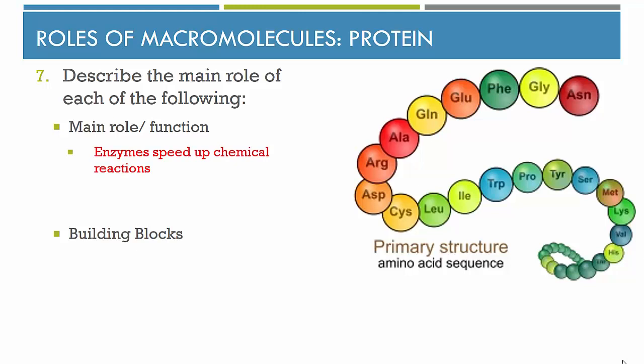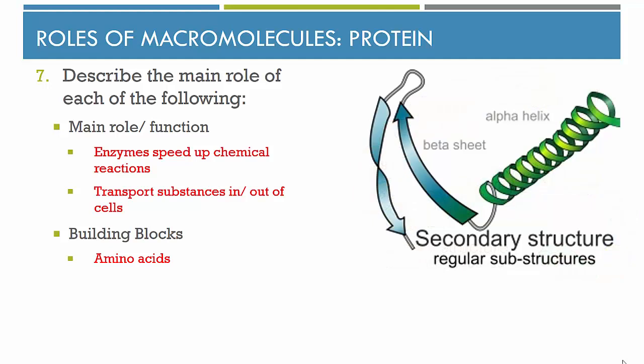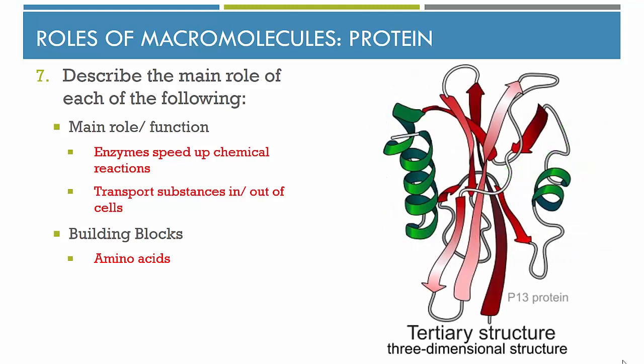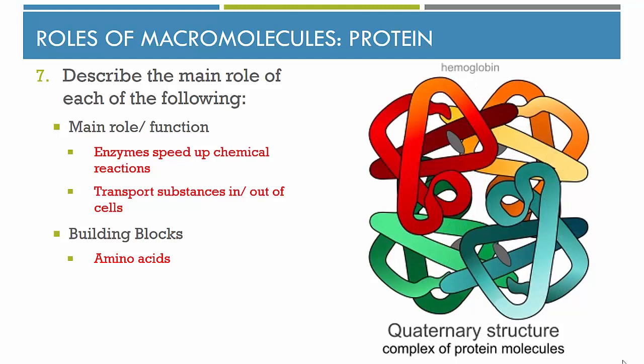Protein does a lot of different jobs. In particular, enzymes are proteins that speed up chemical reactions. Proteins are also involved in transporting substances in and out of cells. The building blocks for a protein are amino acids. Proteins have very complicated shapes — they start as a sequence of amino acids that can be formed into a beta sheet or an alpha helix. Those structures can then be twisted and folded on top of each other to form a three-dimensional structure. The quaternary structure is the complex of protein molecules together. Hemoglobin is shown here as an example of a protein with a very specific shape, giving it its specificity of function.